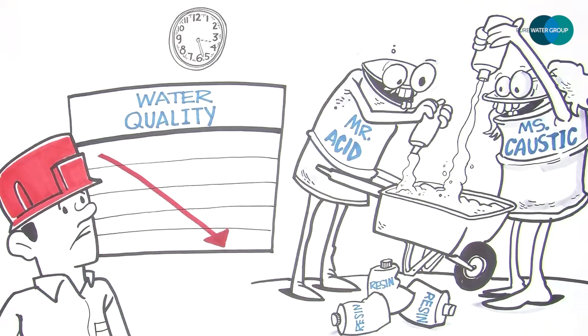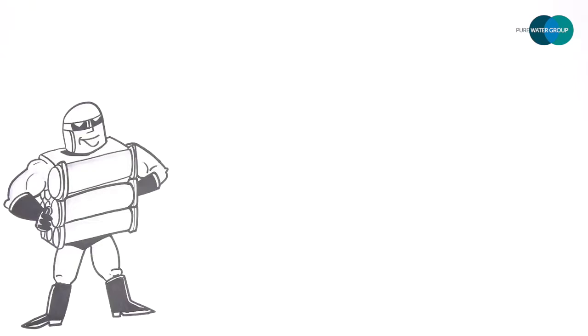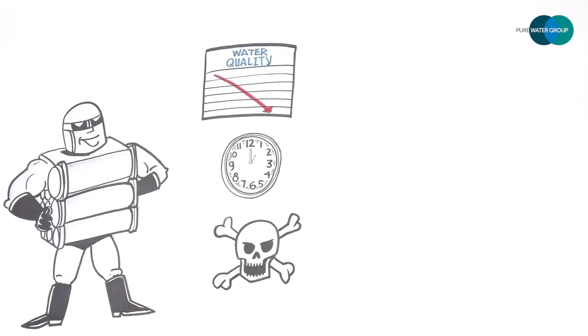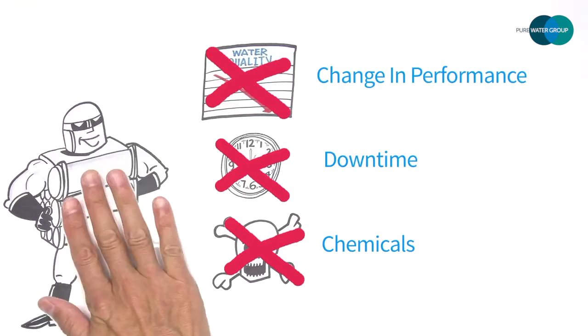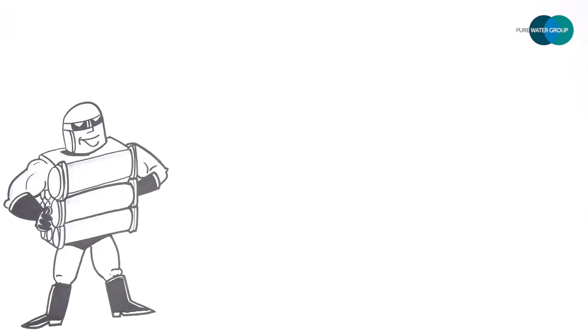Enter IonPure. IonPure CEDI provides a continuous flow of high purity water with essentially no downtime or hazardous acid and caustic chemicals. IonPure CEDI modules use ion exchange resins, ion exchange membranes, and electricity to separate impurities from water and deionize it.